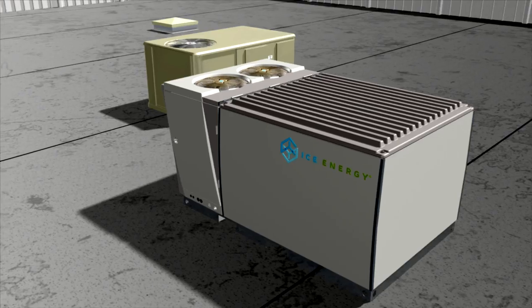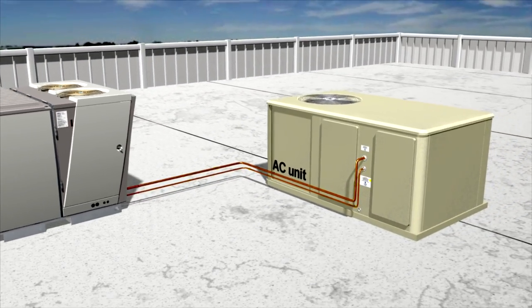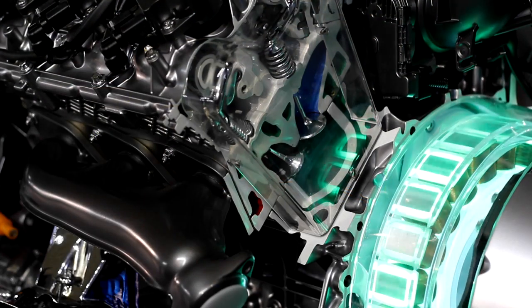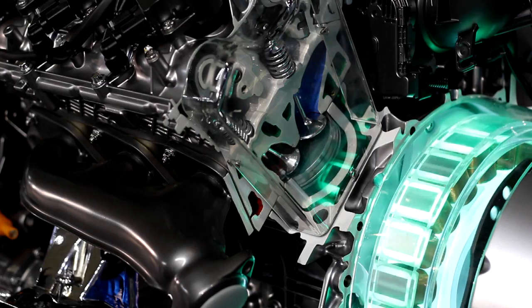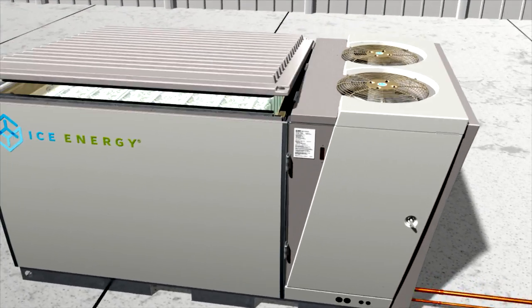The IceBear turns a power-guzzling air conditioner into a more efficient hybrid that consumes less energy during the peak of the day. Much like a hybrid car uses a battery to increase efficiency, the IceBear adds a battery to the air conditioning unit. Except this one is cooler because it's made out of ice.